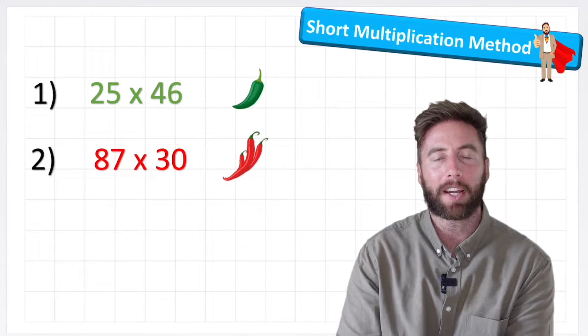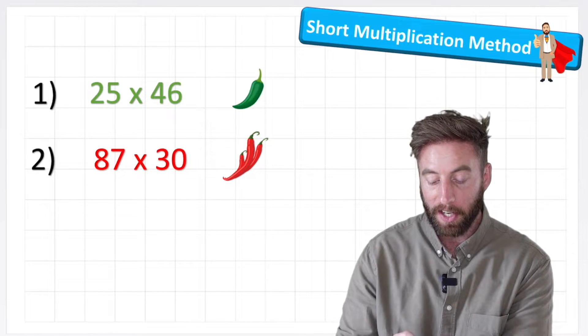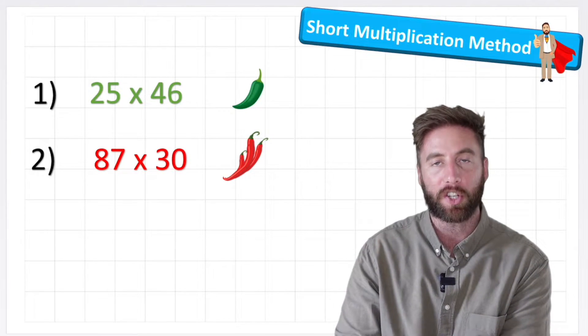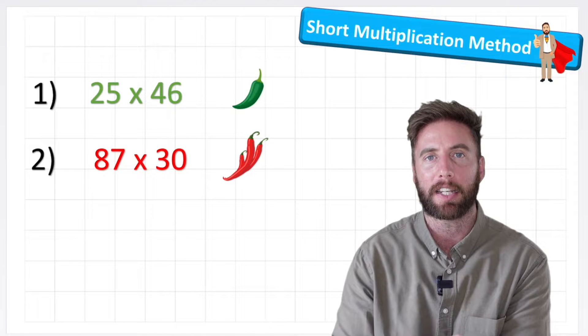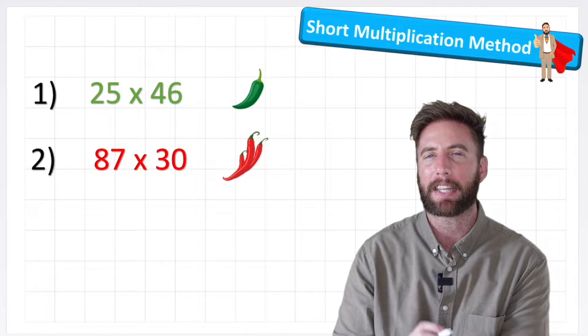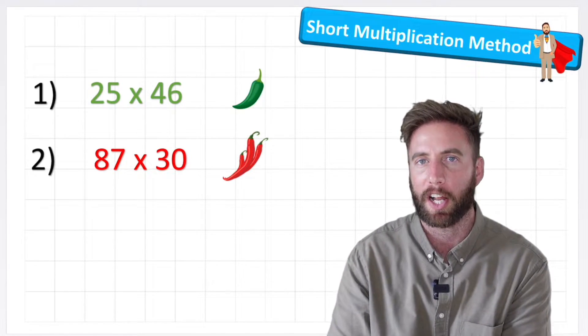Okay, we're going to be looking at these two questions here. We've got a green chili challenge, 25 by 46, and we've got a red chili challenge, 87 by 30, and the 30 is going to be the part that makes this a little bit more challenging than the green chili challenge.